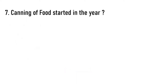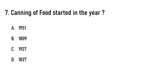Canning of food started in the year dash. Options are A) 1951, B) 1809, C) 1927, D) 1827. The correct answer is option B, 1809.